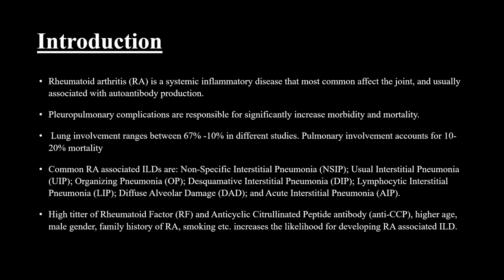Common rheumatoid arthritis-associated ILD patterns include ILD-UIP, nonspecific interstitial pneumonia, usual interstitial pneumonia, organizing pneumonia, DIP, LIP, diffuse alveolar damage, and acute interstitial pneumonia. High titers of rheumatoid factor, anti-CCP, older age, male gender, family history of rheumatoid arthritis, and smoking increase the likelihood of developing rheumatoid arthritis-associated ILD.